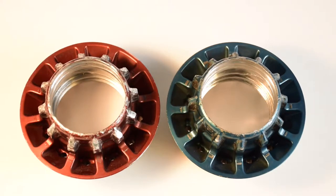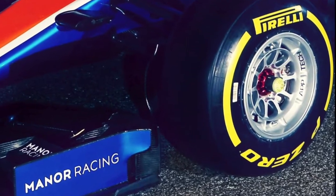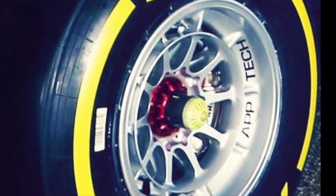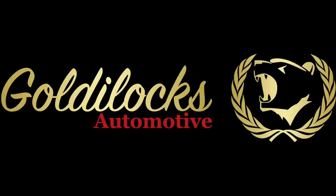Typically when Formula One parts come up for sale on the market they're generally older from the 1980s, 1990s, and if you're fortunate enough from the early 2000s. It is extremely rare and difficult to get current era Formula One parts. Act fast as these are extremely rare and will not be sold anywhere else. If you would like to purchase our Formula One wheel nuts go to our website at goldilocksautomotive.com.